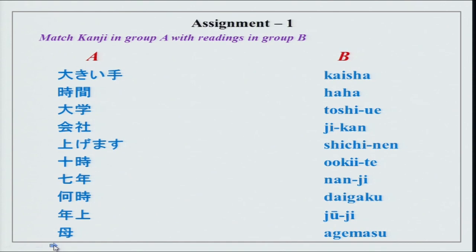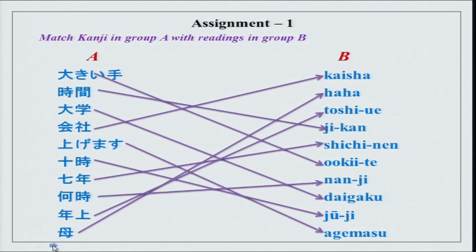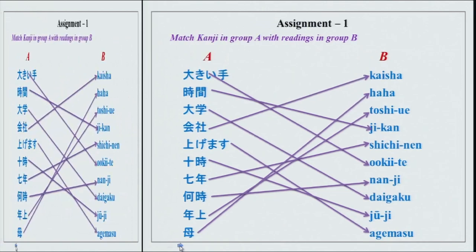Match group A with group B. In group A we have the kanji characters. Group B is the readings in roman. You have your kanjis done. Now we will see what is next.